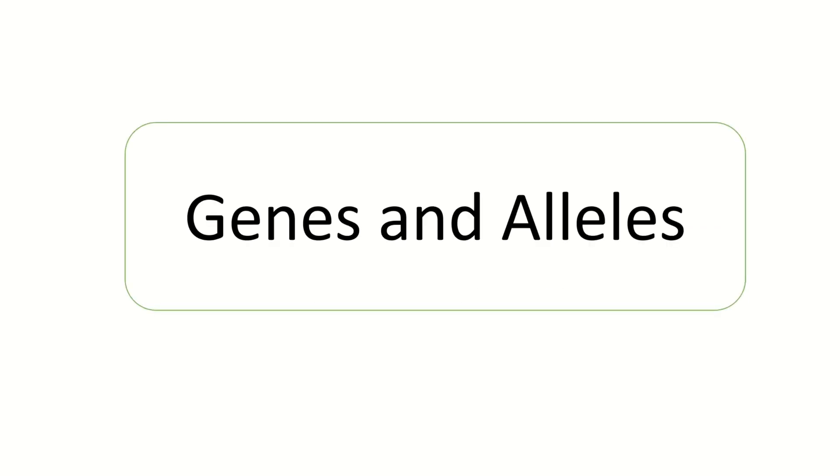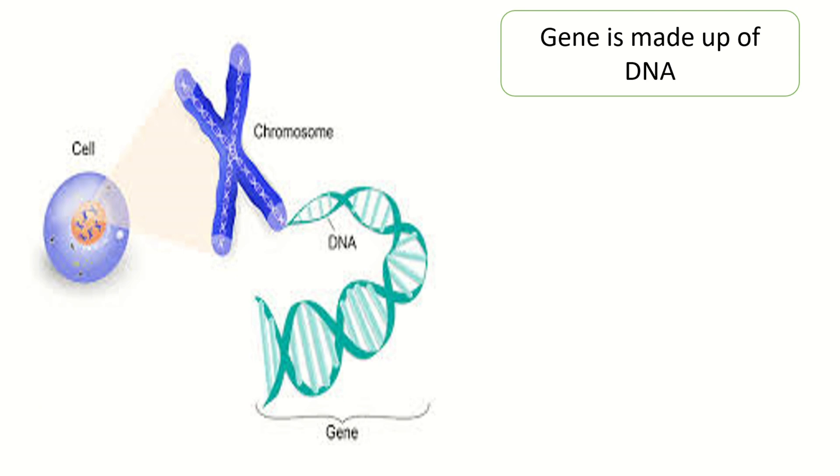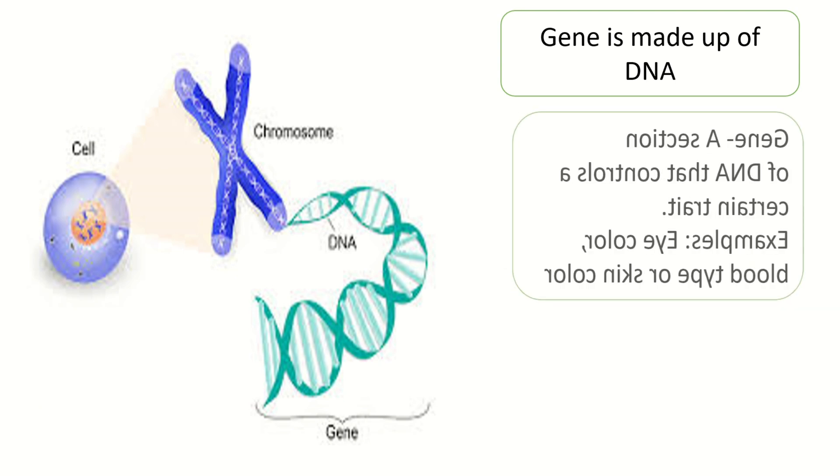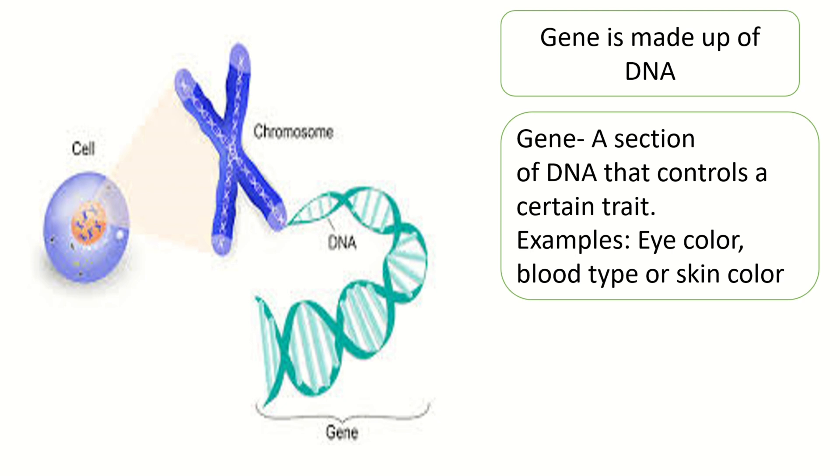Genes and alleles. A gene is made up of DNA. It is a section of DNA that controls a certain trait. Examples: eye color, blood type, or skin color.